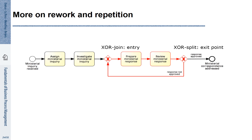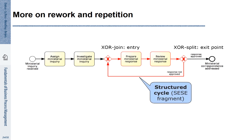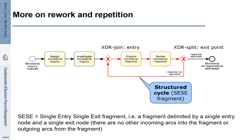If the response is approved, the process terminates. If the response is not approved, we repeat the part that is highlighted in red. This loop is a special loop — it is a so-called single entry, single exit fragment. This means there is one unique way to enter this loop and one unique way to exit it.